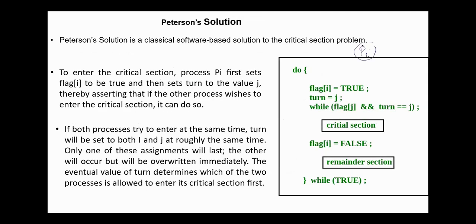This is the code for process Pi. To enter the critical section, process Pi sets flag[i] to true and then sets turn to j, asserting that if the other process wishes to enter the critical section, it can do so. Next, if the condition flag[j] AND turn equals j is false, then process Pi is allowed to enter its critical section. Otherwise, if the condition is true, process Pi must wait and is not allowed to enter. On exit from the critical section, process Pi sets its flag to false, allowing other processes to enter.